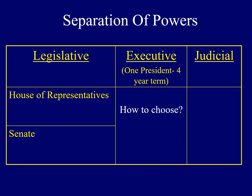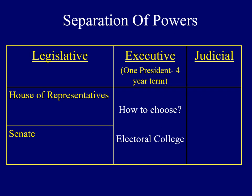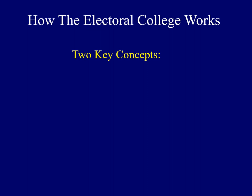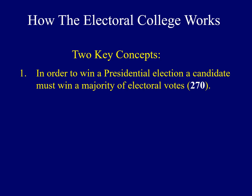Some argued that the American people or voters should directly elect this President. Others said it should be members of the House or the Senate. Eventually, they chose something unique — they decided to create something called the Electoral College. There are two key concepts when it comes to explaining how the Electoral College works. First, in order to win a Presidential election, a candidate must win a majority of electoral votes. The magic number these days is 270.